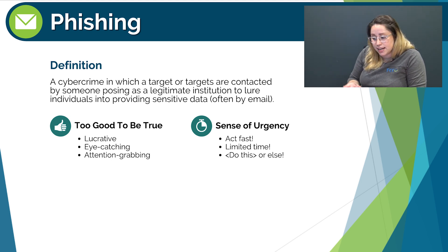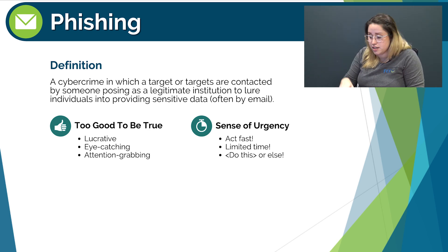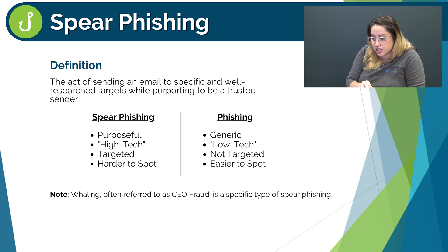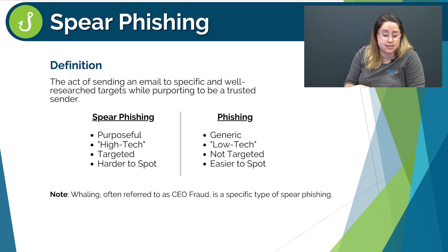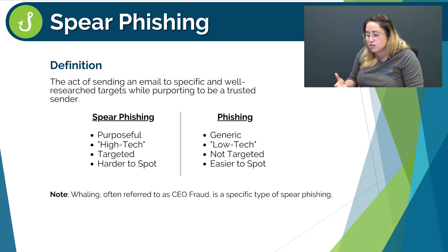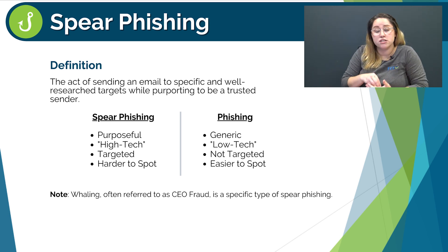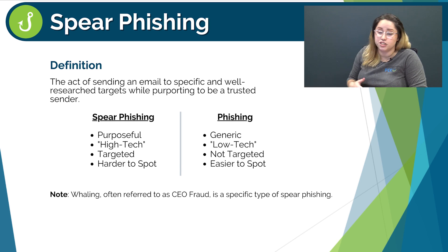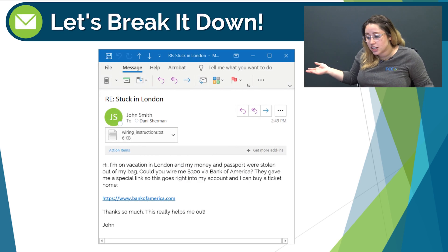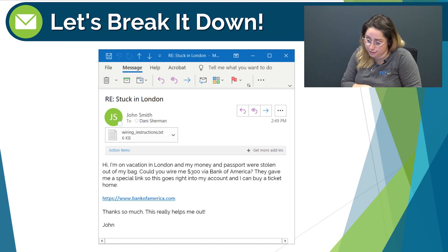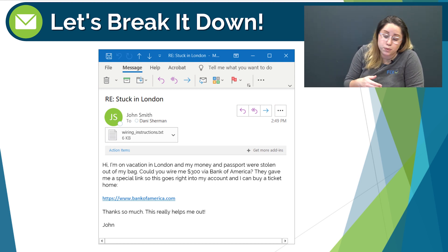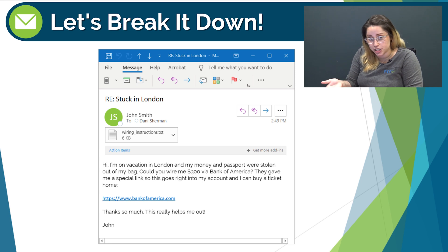I've listed some common sentiments encountered in most phishing emails, such as something appearing to be too good to be true or a sense of urgency. Spear phishing is a slight variation on phishing — it's the act of sending an email to specific and well-researched targets while purporting to be a trusted sender. The main difference is that phishing emails are often sent to thousands of random people, so the information in the email is vague and could apply to anyone. Spear phishing emails are sent to a smaller subsection of people who have something in common, such as a shared workplace or group. Let's take a look at an email for some common phishing red flags that can be applied to email phishing as well as vishing and smishing.